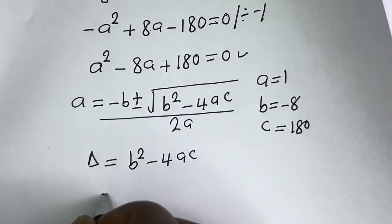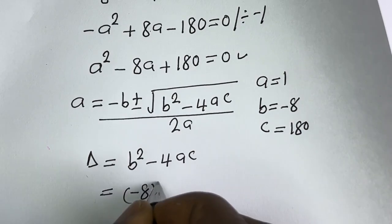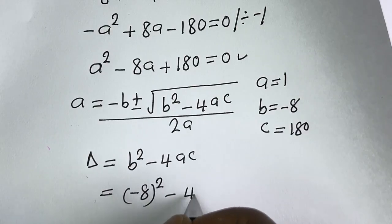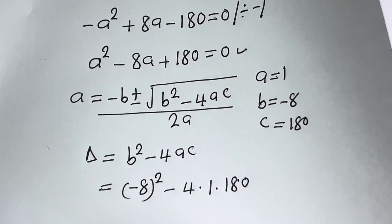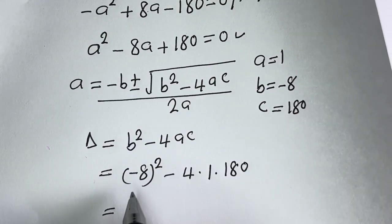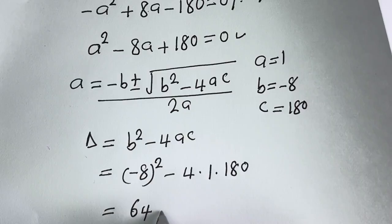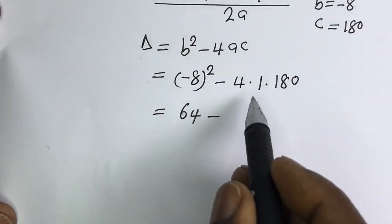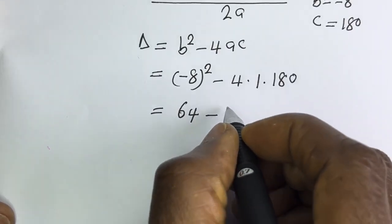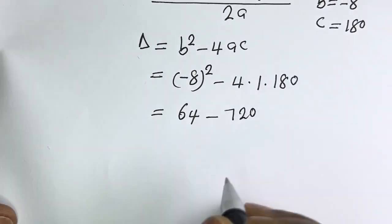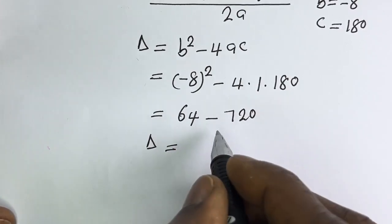The discriminant D equals B squared minus 4AC. That is (minus 8) squared minus 4 times 1 times 180, which equals 64 minus 720. Therefore D equals 64 minus 720, which is minus 656.